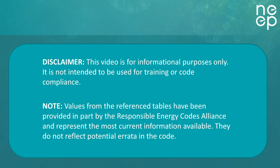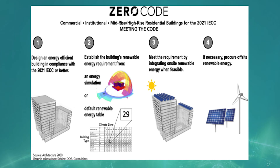Now, let's get started. Perhaps the most notable addition to the 2021 IECC is that it is the first model energy code to include a zero energy appendix for commercial buildings. The American Institute of Architects proposal, accepted by voting members of the IECC, provides a standard table that determines how much on- or off-site renewable energy a building must either produce or procure in order to account for the building's annual energy usage.